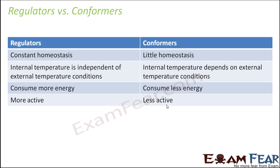Comparing regulators with conformers: regulators have constant homeostasis, therefore they consume more energy because a lot of metabolic activity takes place inside the body. So these organisms are more active, whereas conformers are less active because they always want to keep themselves safe and try to conserve energy. In regulators, internal temperature is independent of external temperature, while in conformers the internal temperature changes as the external temperature changes — if external temperature increases, internal temperature also increases, and if it decreases, internal temperature also decreases.